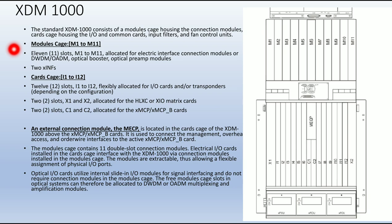Module cards M1 to M11 — here you can see the module cages from M1 to M11. There are 11 slots M1 to M11, allocated for the electrical interface connection modules, DWDM OADM modules, or optical booster amplifier modules.